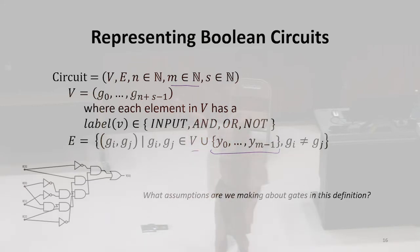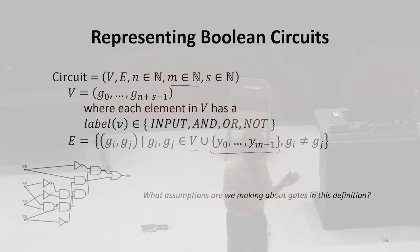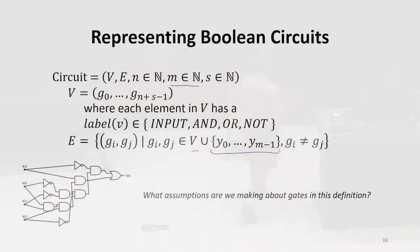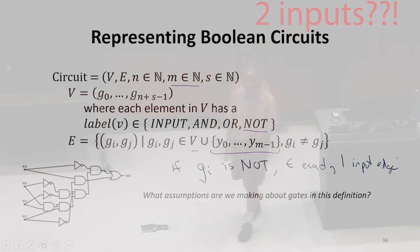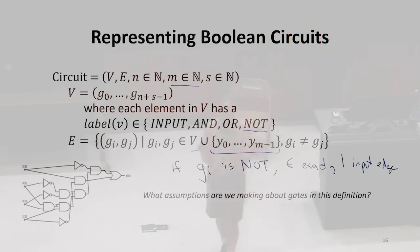There are a lot of constraints required for a circuit to be valid that this definition doesn't capture. It doesn't say anything about if something is a NOT gate, it needs to have one input, or if it's an AND gate it needs exactly two edges coming in. There are lots of constraints that this doesn't capture, so there are lots of invalid circuits.